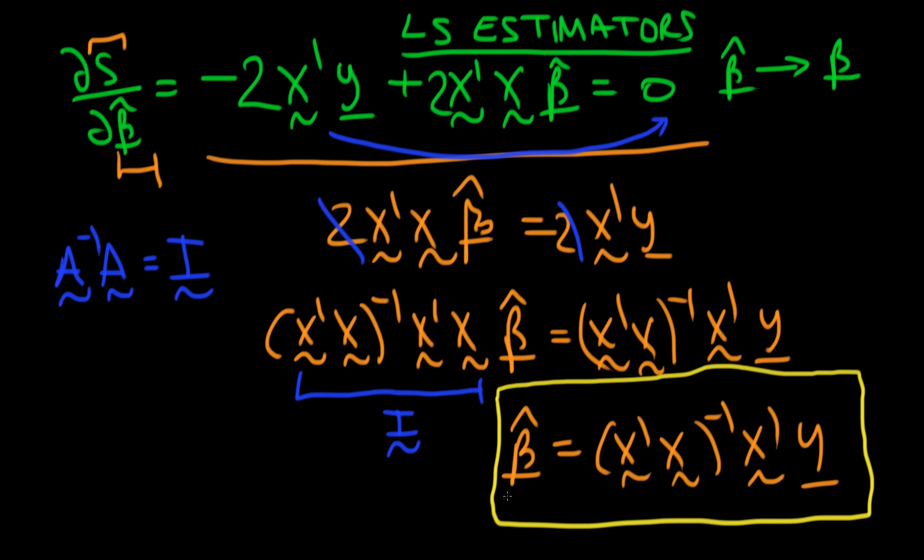So this is the form of least squared estimators when I've got p parameters in my population, or when I've got p independent variables causing changes in the dependent variable.